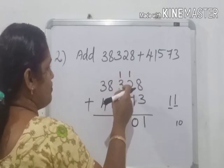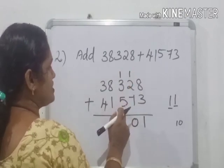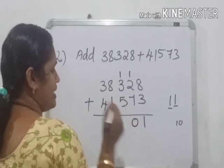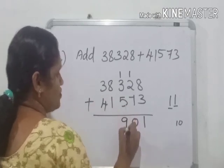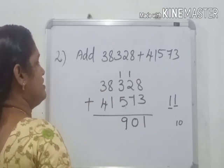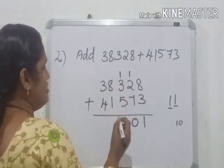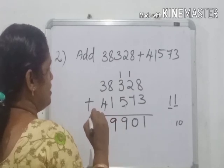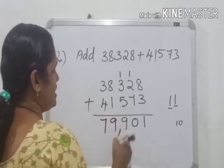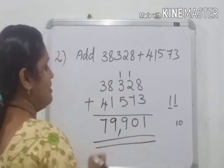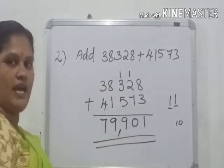Then 3 plus 1 is 4, 4 plus 5 is 9. 9 is a one-digit number, there is no complication. So write here 9. Next, 8 plus 1 is 9. 3 plus 4 is 7. 79,901 is the answer.